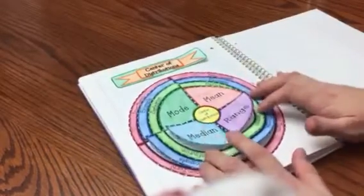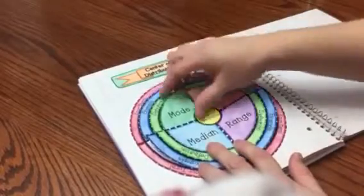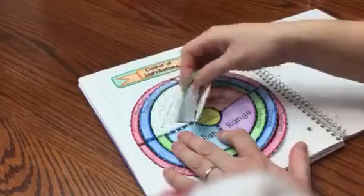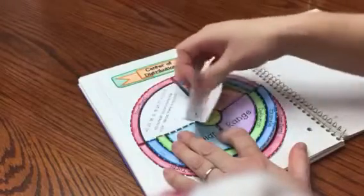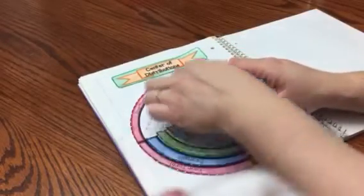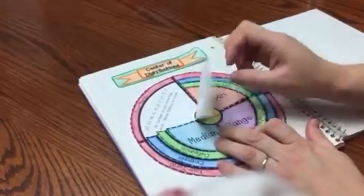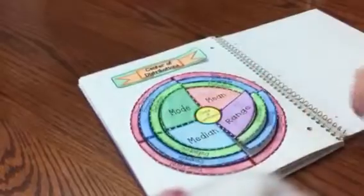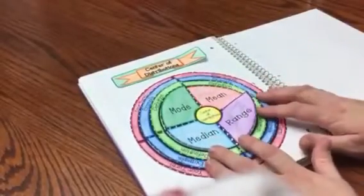And so they can ask themselves for example what is mode? And mode will give you the definition and then it'll give you an example. And then it's your turn. So it'll give you another list of data and then you will have to find out what the mode is. So that's a really cool foldable on the three M's.